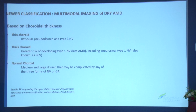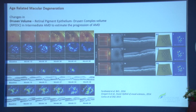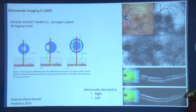Based on choroidal thickness, you can predict whether the patient will develop type 1, type 2, or type 3 CNVMs. Choroidal biomarkers — including thinning — can be seen in retinal pseudodrusen, and you can chart these drusen over time as they grow. There's also a new article showing retro mode imaging on Mirante, where you can decenter the image from left or right and see what's happening at the retinal surface, similar to an en-face image.